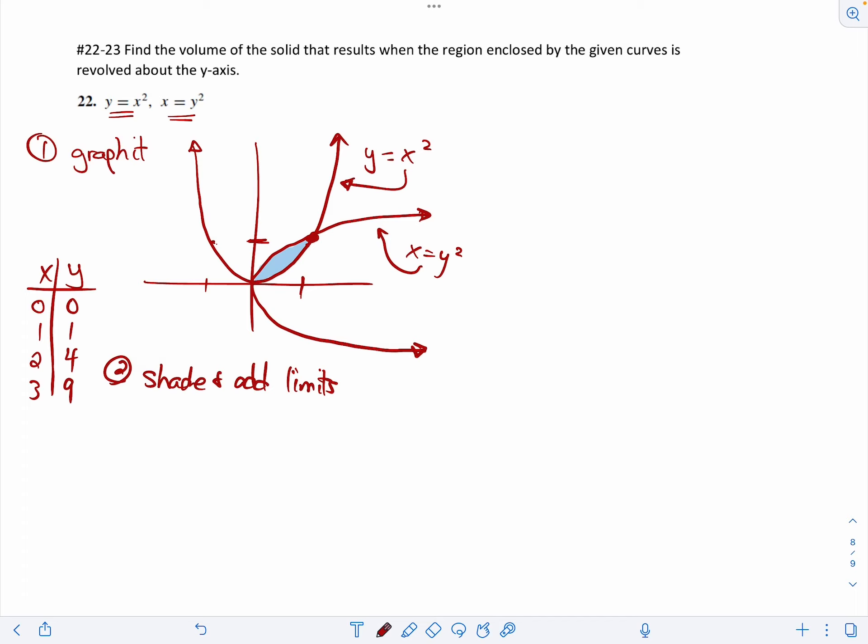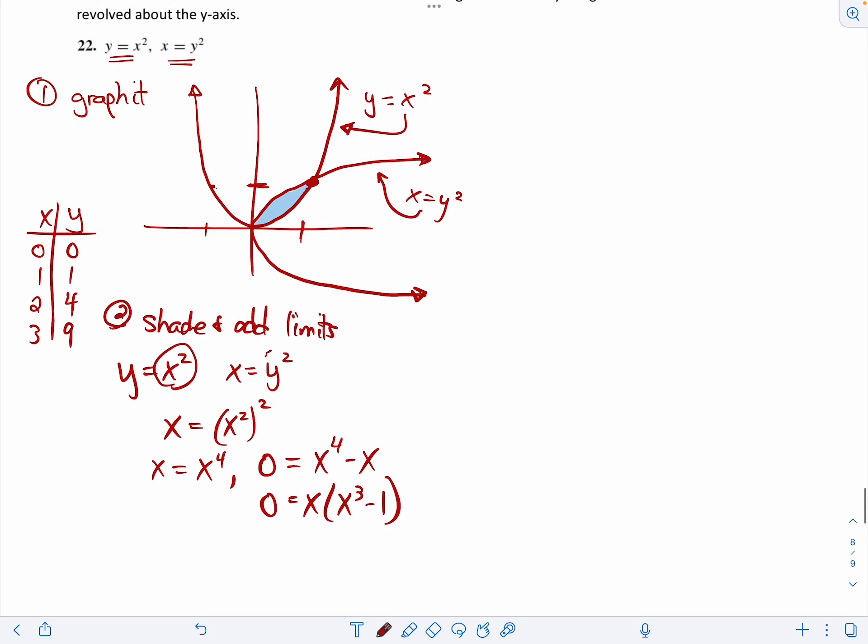You could use the process of substitution. If y equals x squared and x equals y squared, I'm just going to put wherever I see a y, I'm just going to put x squared. So that means x equals x squared squared. So that means x equals x to the fourth. And in order to process this, to find out all the points, I would gather all of those expressions on the right. So you have zero equals x to the fourth minus x. And then factor. I take out one x and that's x cubed minus one.